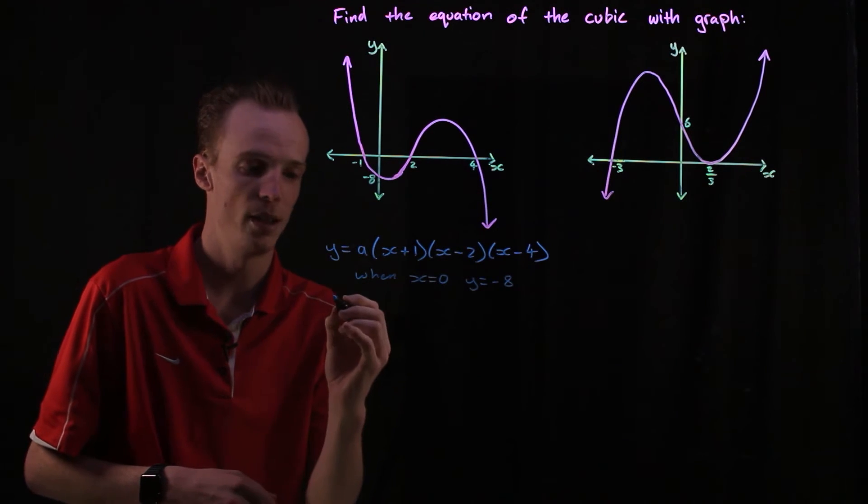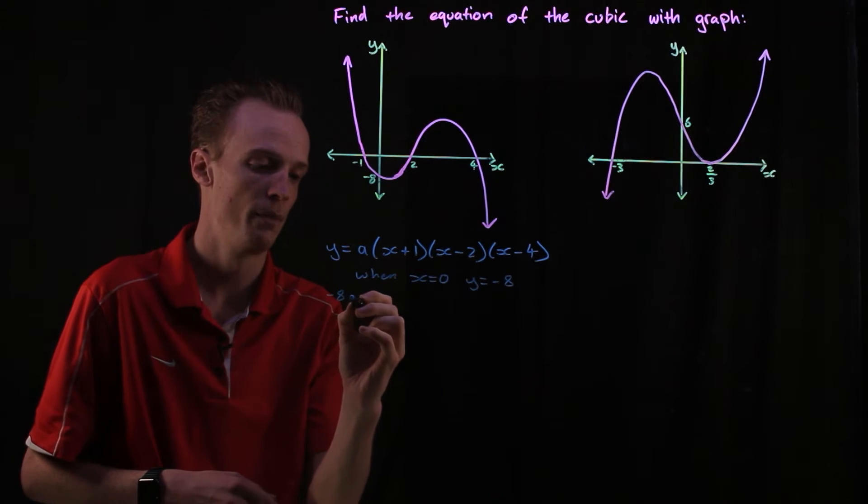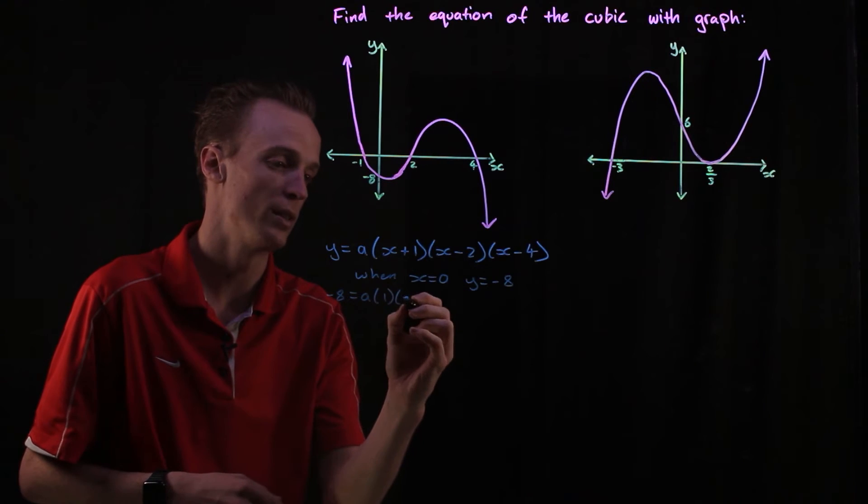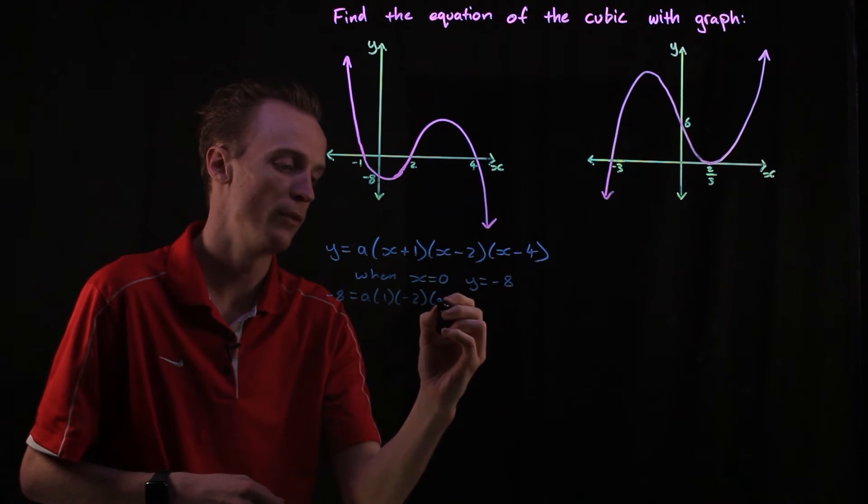When y is equal to negative eight, our x is going to be equal to zero. So this will be one overall, zero take two is negative two, zero take four is negative four.